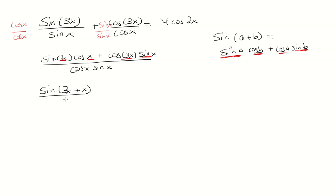And then in the denominator we have cosine x sine x. So one thing to note, sine 2x is 2 sine x cosine x. So if I divide both sides by 2, I have 1 half sine 2x equals sine x cosine x, which is also equal to cosine x sine x. So this will just be 1 half sine 2x.